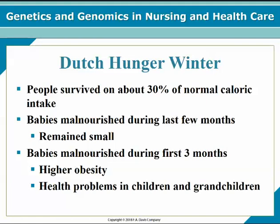An example that can help explain epigenetics is the Dutch Hunger Winter. During the winter of 1944 to 1945, World War II brought bitter cold and brutal conditions. The western Netherlands was under Nazi control, and a blockade prevented food shipments from reaching the region. People survived on about 30% of normal caloric intake, and this period of significant famine provided important information to scientists.